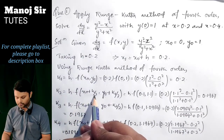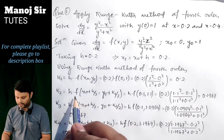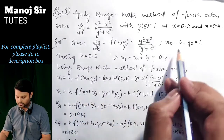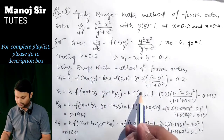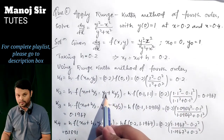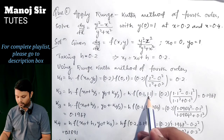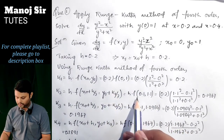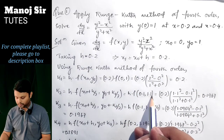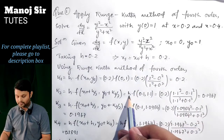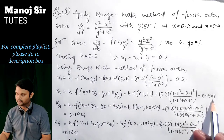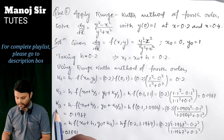Now k₂ = h·f(x₀ + h/2, y₀ + k₁/2). Here x₀ + h/2 = 0 + 0.1 = 0.1, and y₀ + k₁/2 = 1 + 0.1 = 1.1. Putting x = 0.1 and y = 1.1 into the function and multiplying by h = 0.2, we get k₂ = 0.1967.